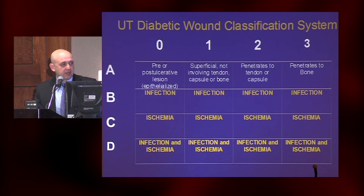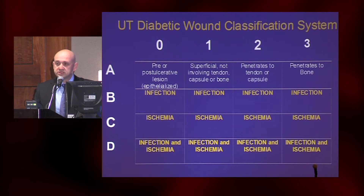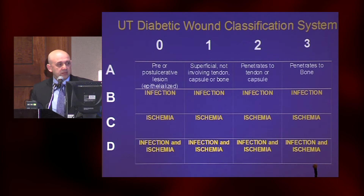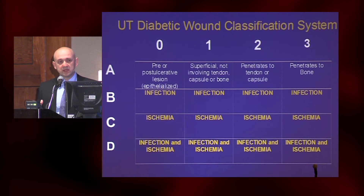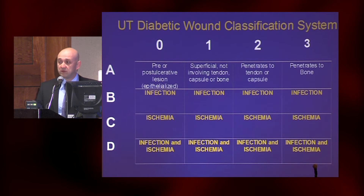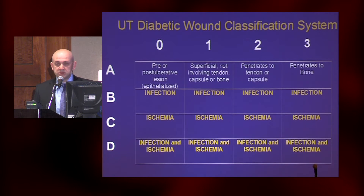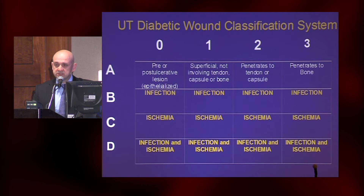A more robust classification system was published several years ago called the University of Texas Diabetic Wound Classification System. The authors realized that it's not only the depth of the injury — it's actually the ischemia and the infection, and maybe the combination of all of them, that place the patient at risk. You can see from zero being a pre-ulcerative lesion to grade three, which would be probing to bone, with B for infection, C for ischemia, and D for a combination of infection and ischemia.